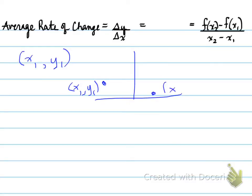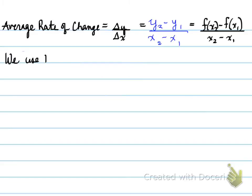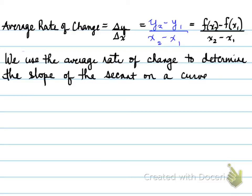So here we go: (x1, y1) a point, and (x2, y2) being another point. We have a line that will connect those two points, and we have to determine the slope between them. Write one of the points going upwards - let's say the rightmost point, (x2, y2) - then write the other point (x1, y1) going upwards. Then draw three lines: one to separate the y's, one to separate the y's and x's, and another to separate the x's. What we've done is generate the equation of the slope of a line. We use the average rate of change to determine the slope of the secant on a curve.